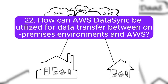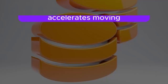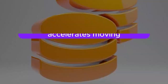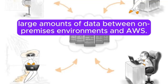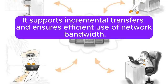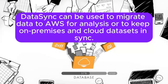22. How can AWS DataSync be utilized for data transfer between on-premises environments and AWS? Answer: AWS DataSync is a data transfer service that simplifies and accelerates moving large amounts of data between on-premises environments and AWS. It supports incremental transfers and ensures efficient use of network bandwidth. DataSync can be used to migrate data to AWS for analysis or to keep on-premises and cloud datasets in sync.